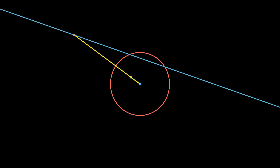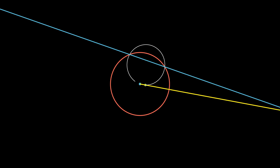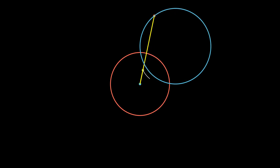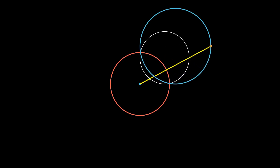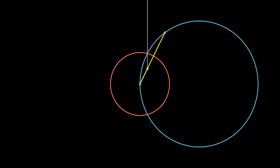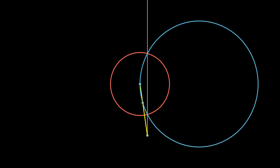Inversion of a single point by itself is not very interesting. What we are interested in is the inversion of a collection of points, such as a line or a circle. As we can see, if we invert a line, we get a circle. Similarly, if we invert a circle, we get another circle. However, if we invert a circle that passes through the center, we get a line. We can think of lines as circles that pass through the point at infinity, and then we can safely say that circles get mapped to circles under inversion.